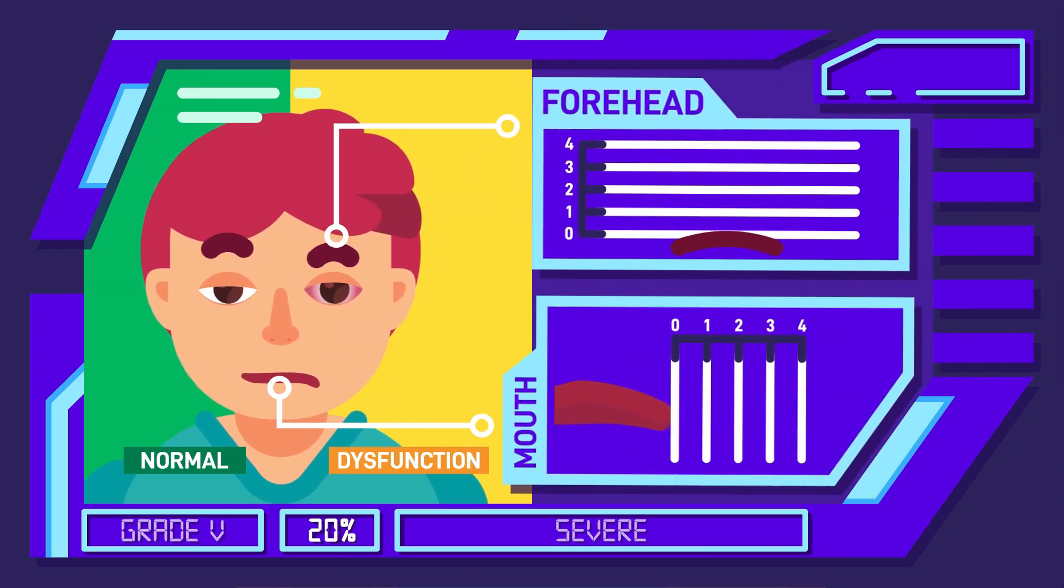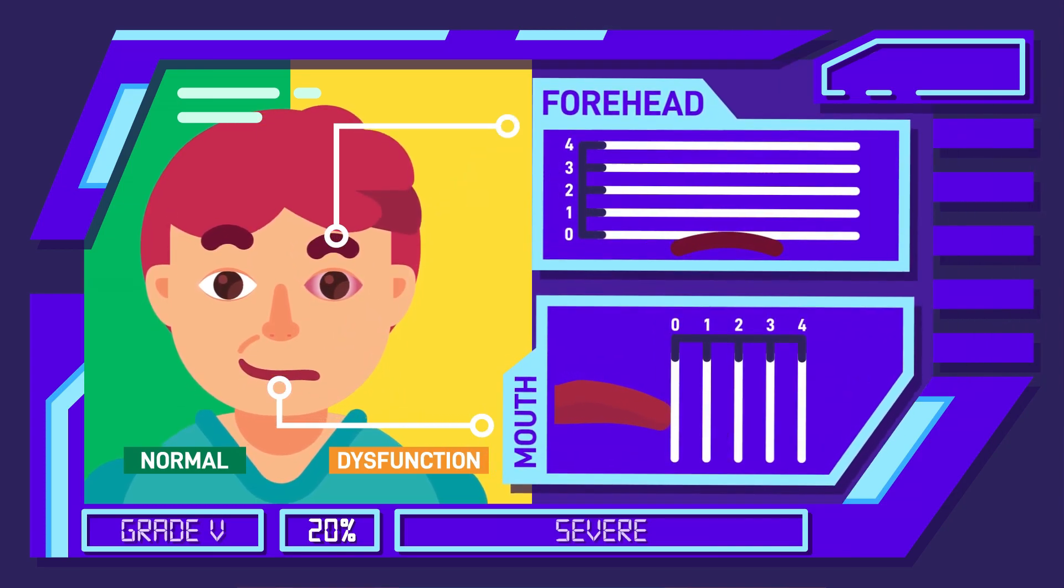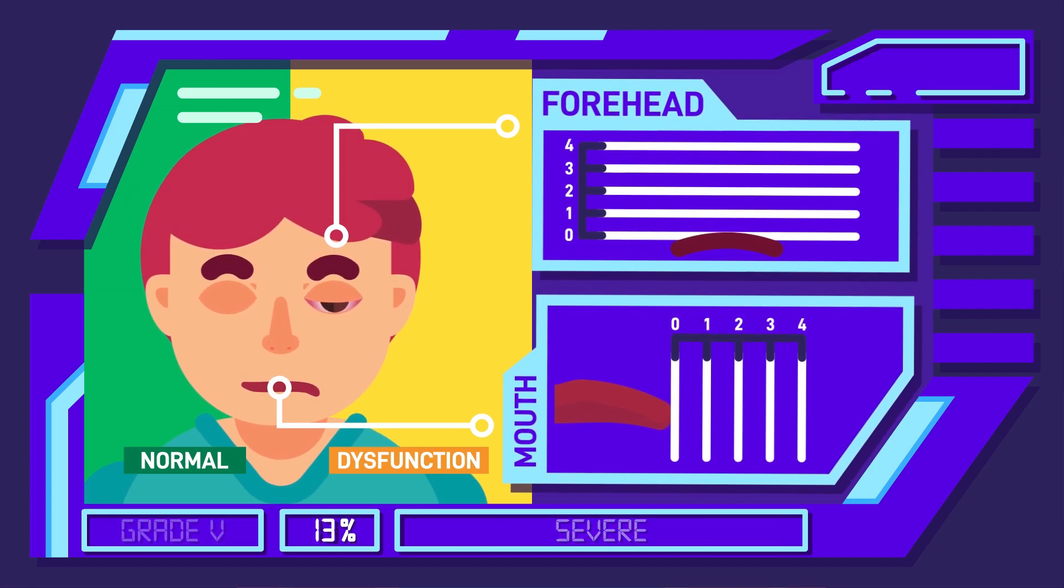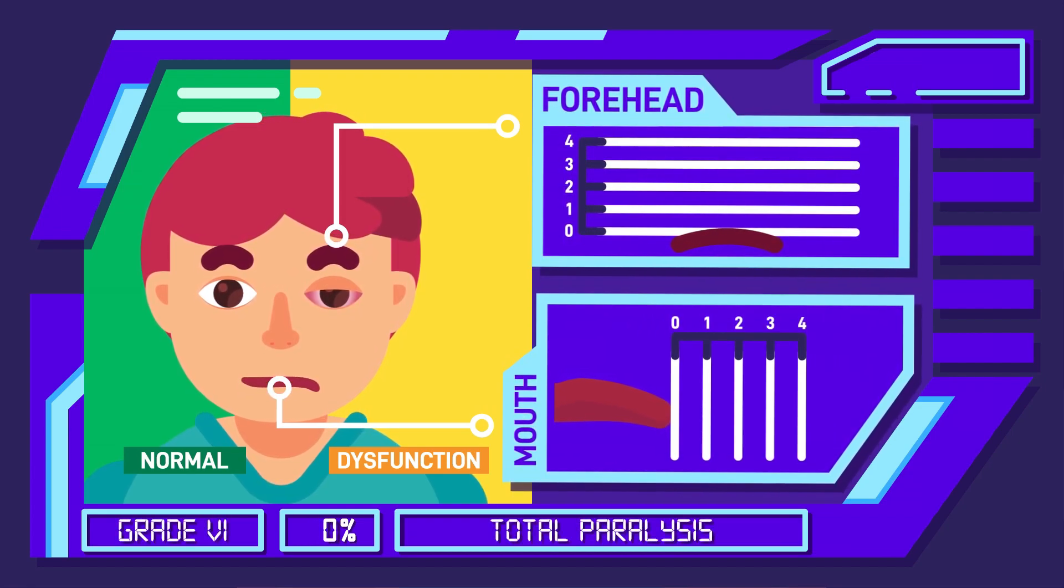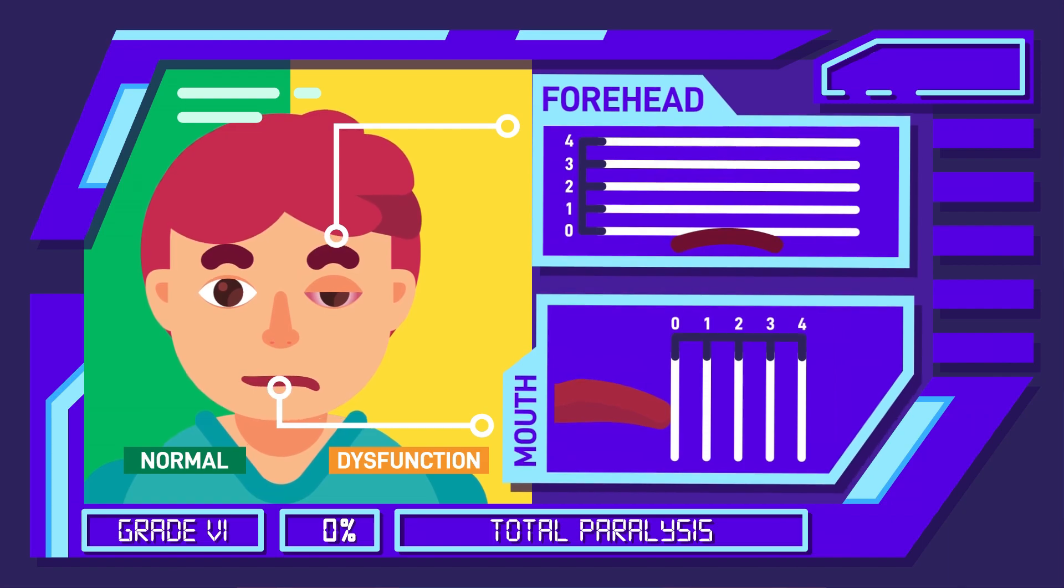This gives an overall impression that there is a barely perceptible motion in this group's faces. People in grade 6 suffer total paralysis. On the weak side of their face, there is no movement. Neither from the forehead, mouth, nor eyes.